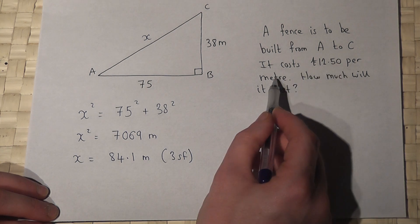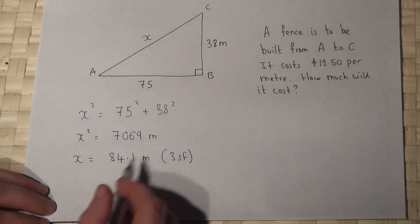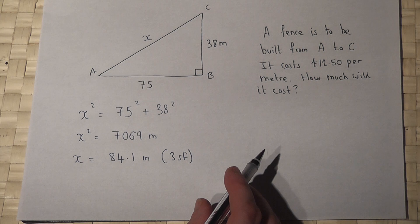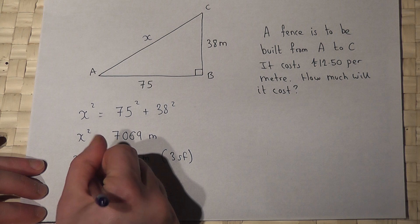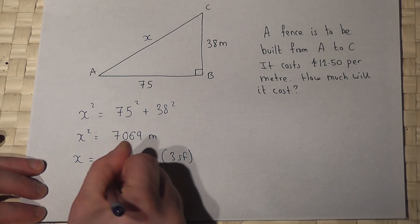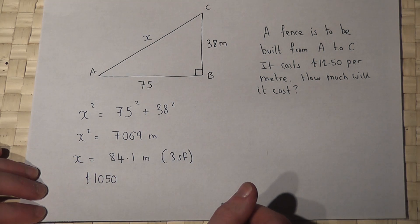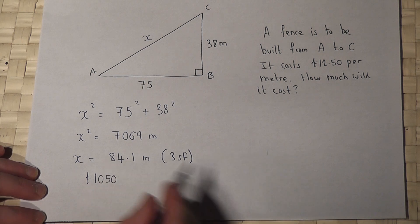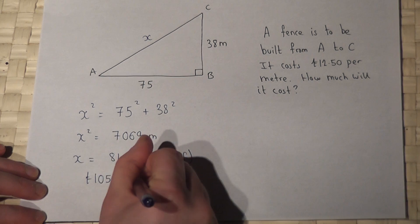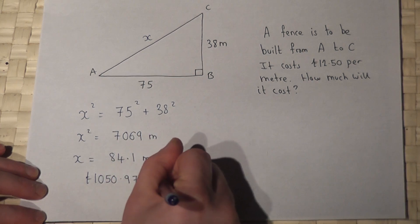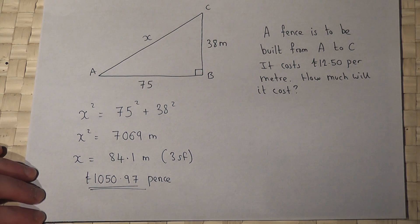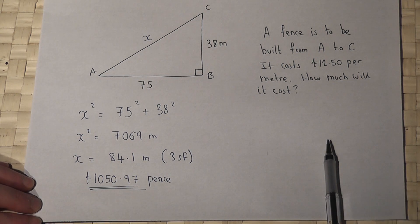So if I times this value on my calculator by 12.5, then I get the answer of £1050. Always round money to 2 decimal places. Use the accurate number from your calculator and we get 97 pence. So the cost for this fencing is £1050.97.